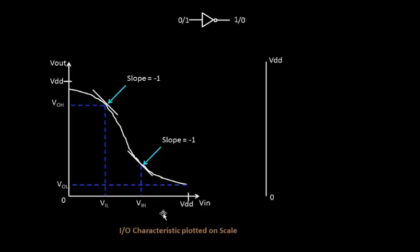Let's plot this particular curve and forget about noise margin terms for now. Let's plot the voltage levels on this scale. The first ones are VOL, VIL, VIH and VOH. The highest of these will be VOH. We know that VOH will be greater than VIH, for reasons we discussed in the last video, where we said that VOH has to always be greater than VIH.